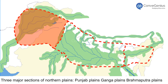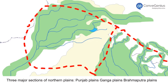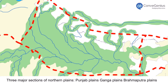The Northern Plains is divided into three major sections. 1. The western part, drained by the Indus and its tributaries — Jhelum, Chenab, Ravi, Beas, and Satlaj — is known as the Punjab Plains. A major part of it lies in Pakistan.